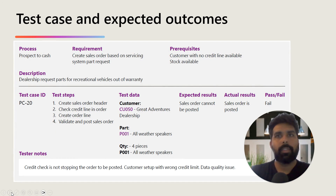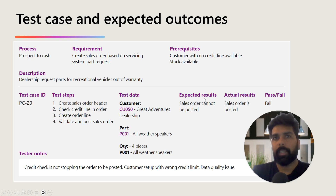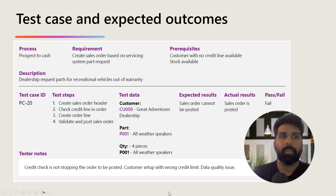Here is how a typical test case looks. You have a process — for example, prospect to cash — a requirement such as creating a sales order based on a service system part request, prerequisites, a description, and then the test steps defined underneath. Each step includes the data you will use, the expected result, the actual result, and a pass or fail outcome. That is how you define everything in the system, test it, and analyze your report based on those data sets.